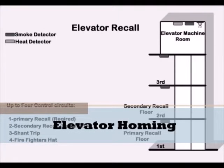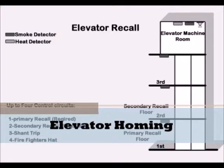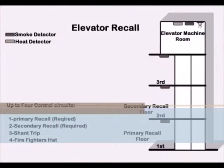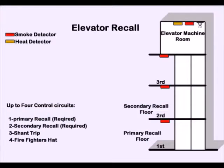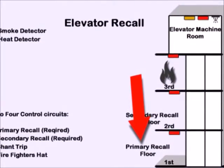Elevator recall refers to homing the elevators when the smoke detectors in the elevator lobbies are active. Usually, the primary floor of homing is the first floor or ground floor. Each elevator lobby typically has a smoke detector. The elevator machine room is sprinkled and has both a heat detector and smoke detector installed. When there is smoke on the second, third, or any floor above that, elevators home to the primary floor, which is usually the first floor.